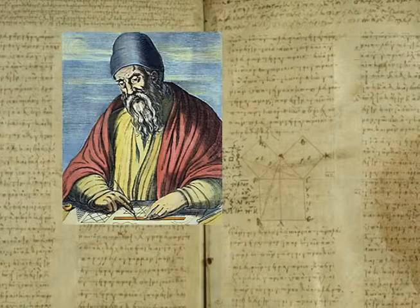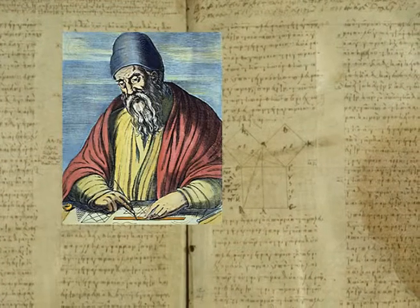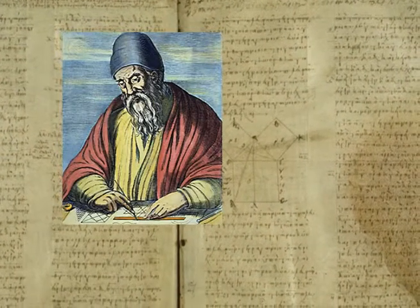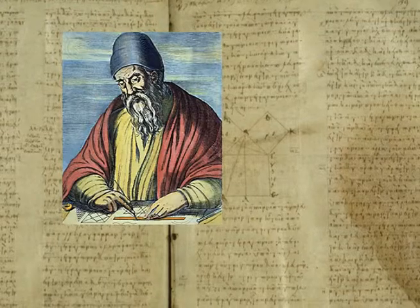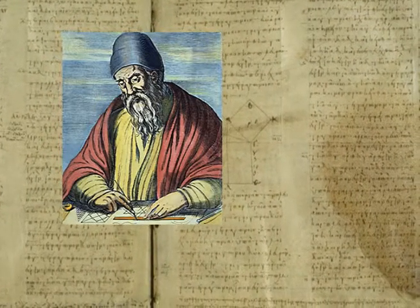One of the most famous proofs comes from legendary Greek mathematician Euclid. Using only rules that he had previously proved to be true, he elegantly demonstrated beyond doubt that the Pythagorean theorem holds for every right triangle.